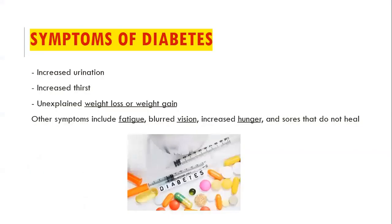First of all, we should know what are the symptoms of diabetes. The symptoms of diabetes include increased urination, increased thirst, unexplained weight loss or weight gain depending upon the condition. Other symptoms include fatigue, blurred vision, increased hunger, and sores that do not heal.